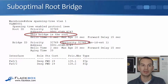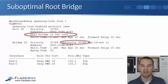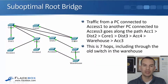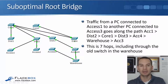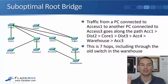If we check this, I go on to a switch — it happens to be the warehouse switch — and I do a show spanning tree VLAN 1. And I can see that this bridge is the root, and the priority is the default of 32768. If we now look at the actual paths that traffic will take throughout our network, I've removed links that have got blocking ports on them, so this shows the spanning tree that traffic is going to be forwarded over.